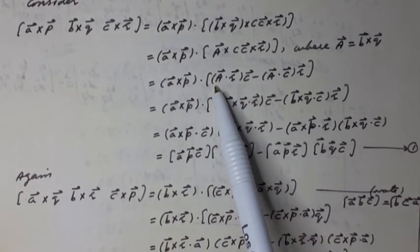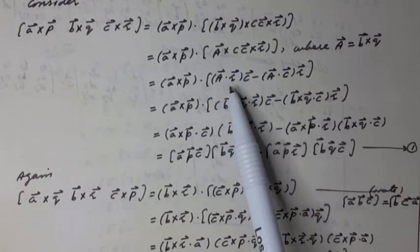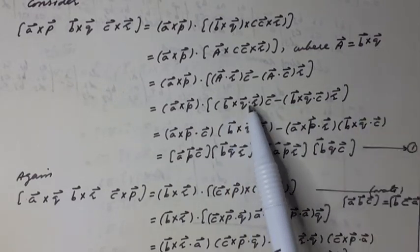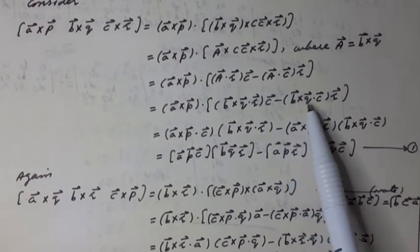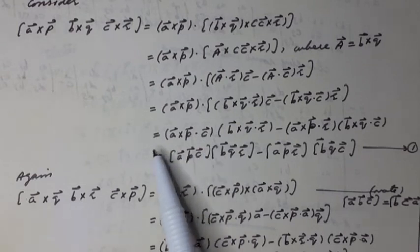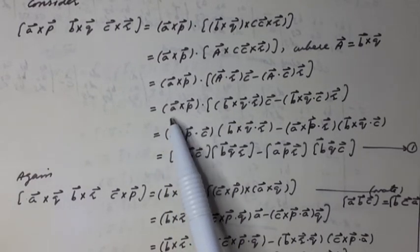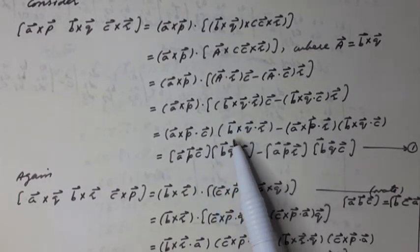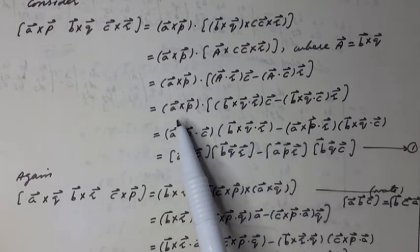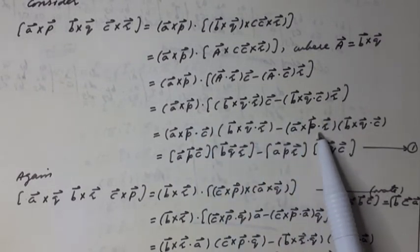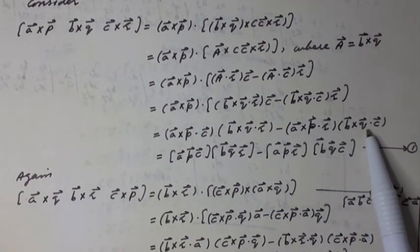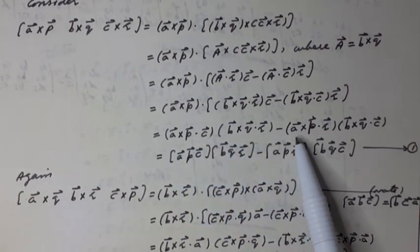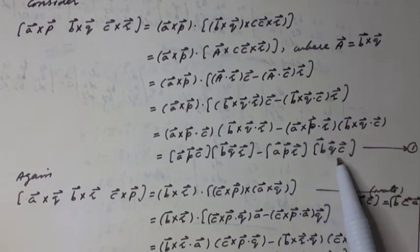Capital A vector dot R vector times C vector minus capital A vector dot C vector times R vector. It can be written as A vector cross P vector dot, where capital A vector equals B vector cross Q vector dot R vector times C vector minus B vector cross Q vector dot C vector times R vector. This gives equation 1: minus A vector P vector R vector box B vector Q vector C vector box.